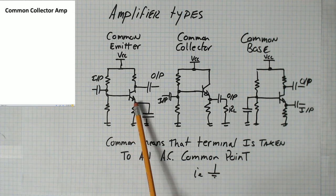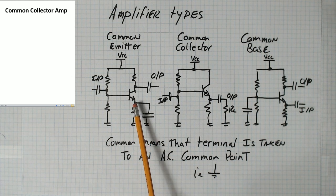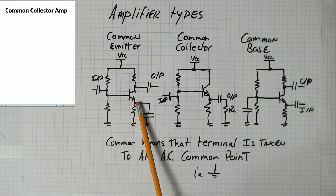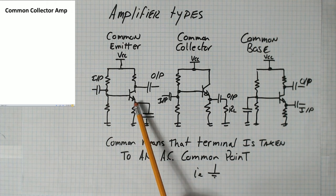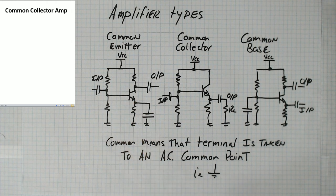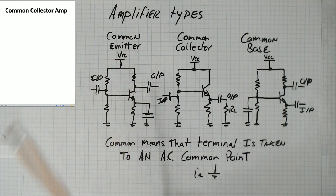By tying this point to ground through a capacitor, the DC voltage isn't grounded. It can still sit at about a 3 volt DC value, but if there's any AC signal here, that's going to get shorted to ground. So this is taken to an AC ground point, or an AC common point, hence the term common emitter.